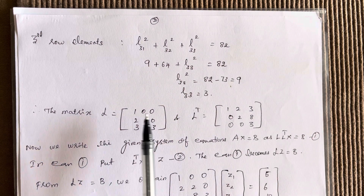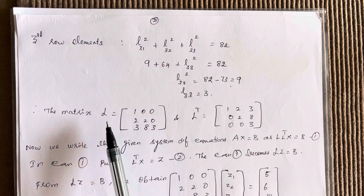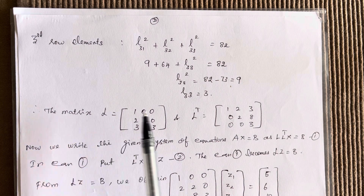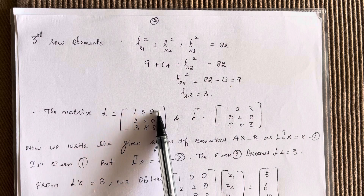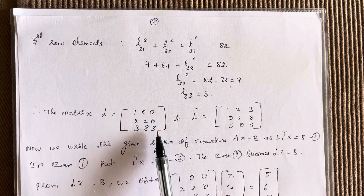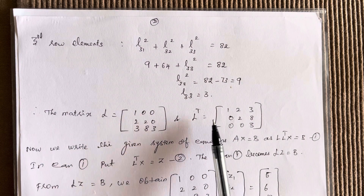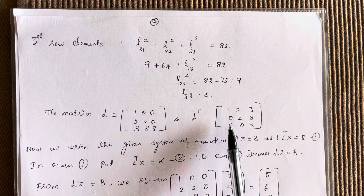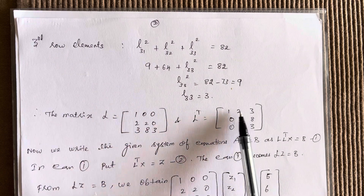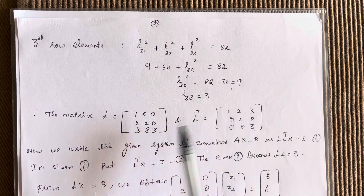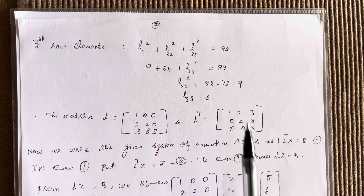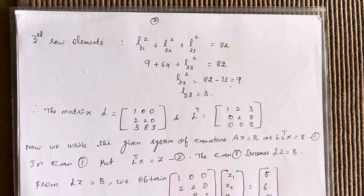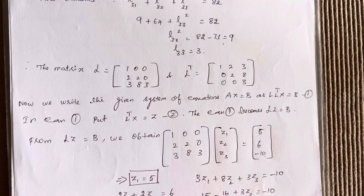Now we have found all the elements of L. The lower triangular matrix L is: 1, 0, 0 / 2, 2, 0 / 3, 8, 3. And L transpose is obtained by writing each row as a column, giving the upper triangular matrix.